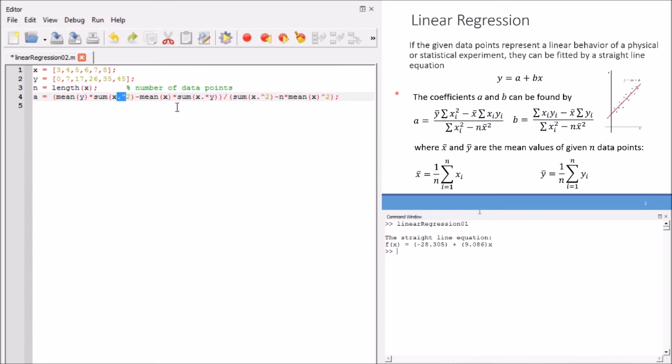Minus mean x multiplied by sum. Again, here also we use dot multiplication or dot star operator to multiply every individual x element by the individual y element having the same index. Again, we divide by the denominator here, the sum of the x squares, minus n multiplied by the mean value. Here we have mean value squared, as we see in the formula.